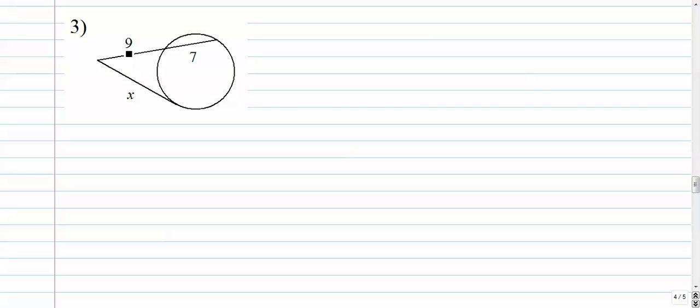Number 3. Immediately train your eyes to go and find that tangent first. The tangent squared equals 9 times the whole thing. x squared equals, let's see, that's 90 plus 54.